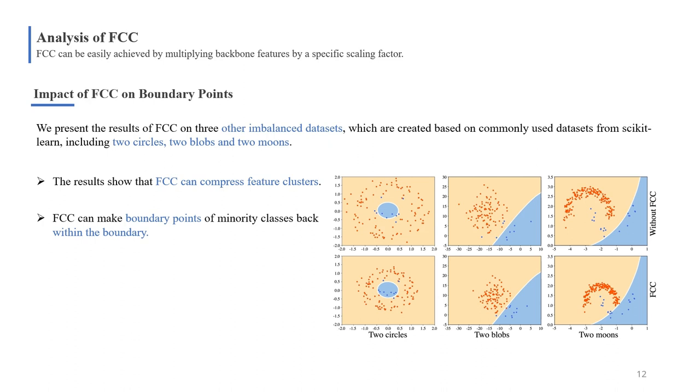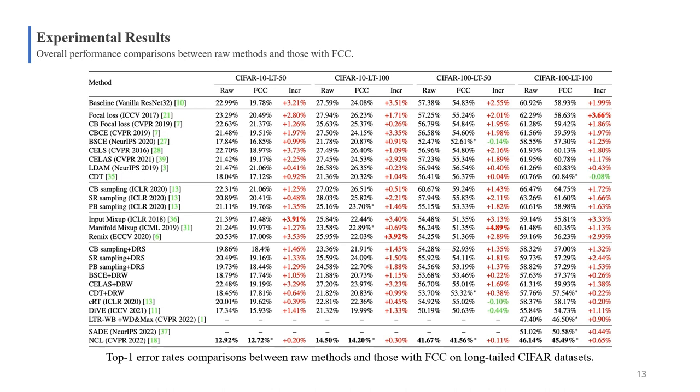Furthermore, we present the results of FCC on three other imbalanced datasets. In the figure, blue and orange points are minority and majority classes, respectively. FCC can significantly compress sparse clusters and bring boundary points back within the decision boundary.